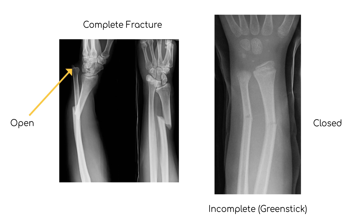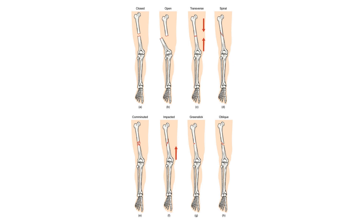A greenstick fracture is an incomplete bone break, and is usually found in children because of their soft bones. Other types of fractures include transverse fractures, where the break occurs at 90 degrees to the longitudinal axis of the bone, comminuted fractures, which are characterized by a shattering of the bone, and oblique fractures occurring at an angle.